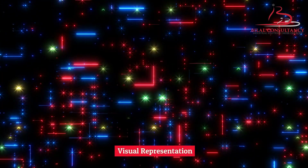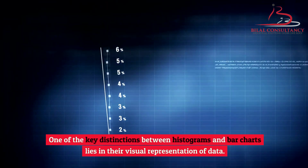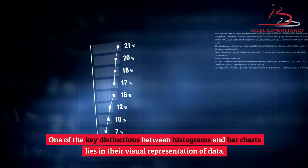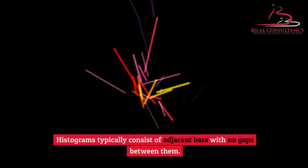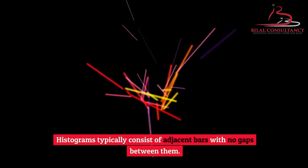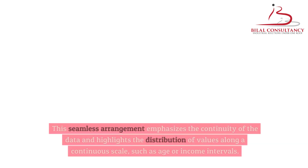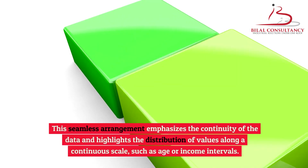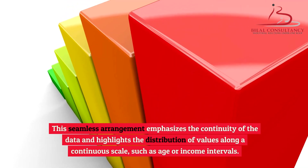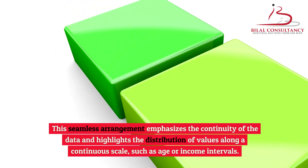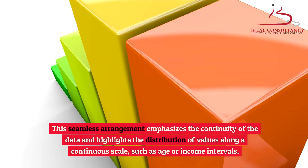Visual representation. One of the key distinctions between histograms and bar charts lies in their visual representation of data. Histograms typically consist of adjacent bars with no gaps between them. This seamless arrangement emphasizes the continuity of the data and highlights the distribution of values along a continuous scale, such as age or income intervals.